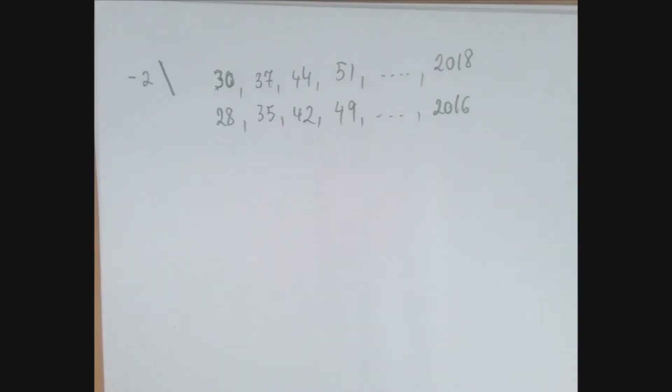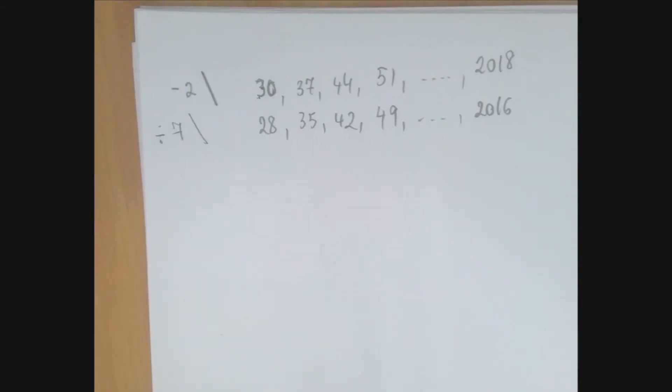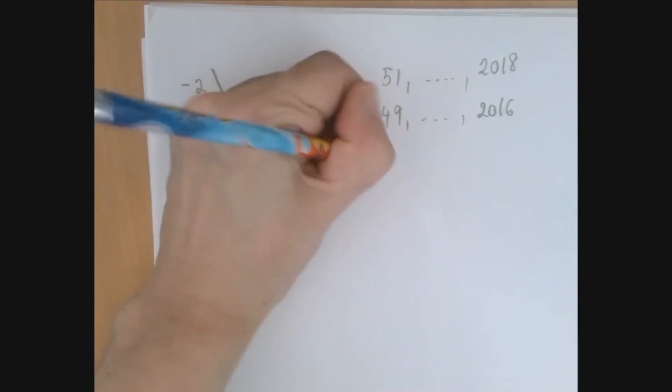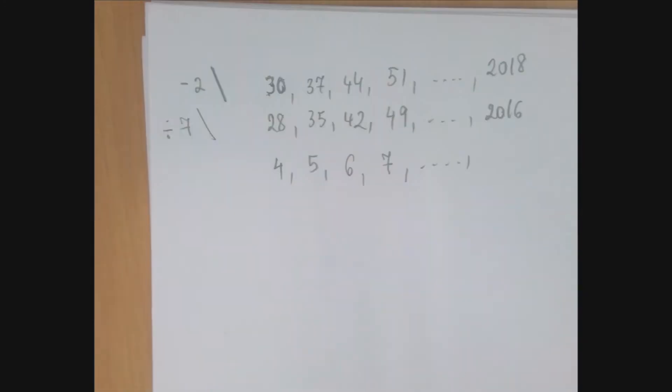So now that we transform these numbers so they are divisible by 7, we're going to harvest the benefits of that and divide every number by 7. 28 divided by 7 is 4. 35 divided by 7 is 5. 42 divided by 7 is 6. 7, and so on. And 2016 divided by 7 is 288.